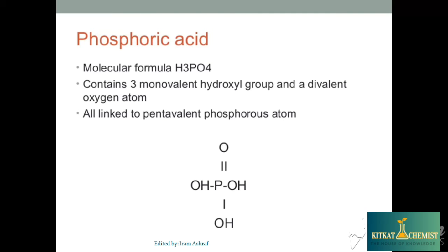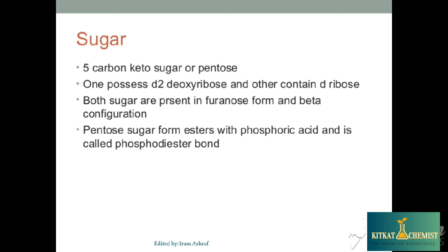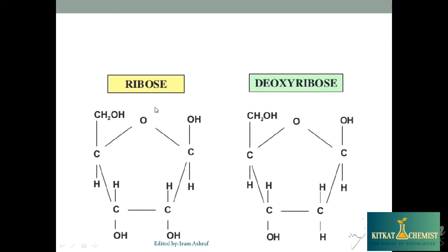Phosphoric acid plays a role here. Phosphorus is pentavalent — three monovalent hydroxyl groups are attached and one divalent oxygen is attached. The sugar is a pentose sugar, also called a keto sugar. Deoxyribose and Ribose sugar differ at Carbon number 2: in Deoxyribose, the hydroxyl group is removed. Ribose has the hydroxyl group present at C2. This is also called the furanose beta configuration. Comparing the ribose and deoxyribose structures, the only difference is that the hydroxyl group at Carbon 2 is absent in deoxyribose.